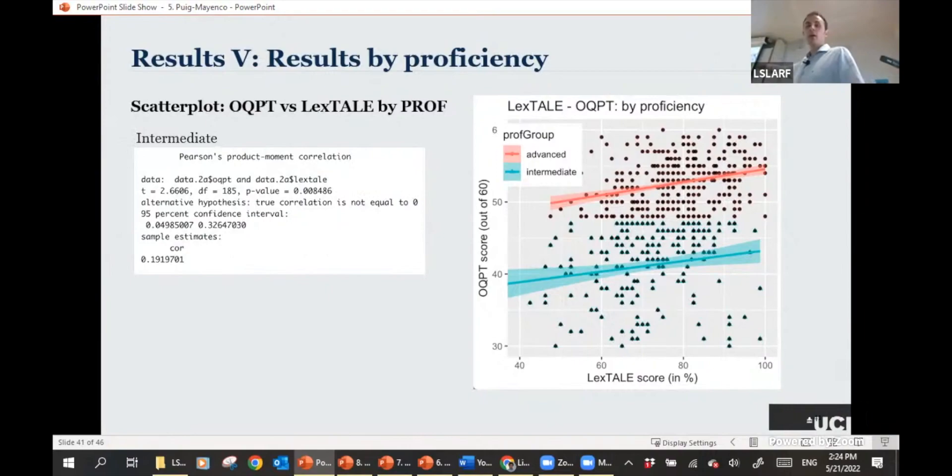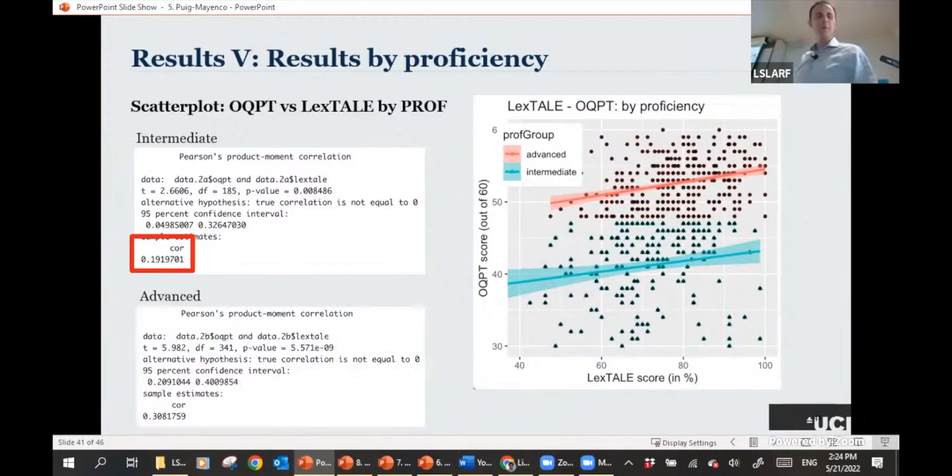When we look at the results by proficiency group, what we actually see, you see in red the advanced participants. In blue here, you would see the intermediate participants. What we do see is that the correlation for the intermediate participants is very low at 0.19, indicating that it doesn't quite work with intermediate learners. And I'm not surprised about this, because it was never intended to do so. When we look at the advanced, the picture is not as nice as I was hoping it to be. It's at a 0.30, when we only look at the advanced, which again, if we think of the results in Lemhöfer's study, that was at a 67. The correlation was 0.67 for the Dutch participants. So here is actually quite low.